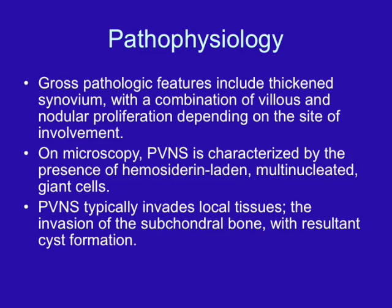In terms of pathology, gross features include thickened synovium with a combination of villous and nodular proliferation. Microscopy shows hemosiderin-laden multinucleated giant cells, which give PVNS its typical low signal on T1 and T2-weighted MRI images. PVNS typically invades local tissues with invasion of subchondral bone and resultant cyst formation, as demonstrated in the femoral head of our patient.